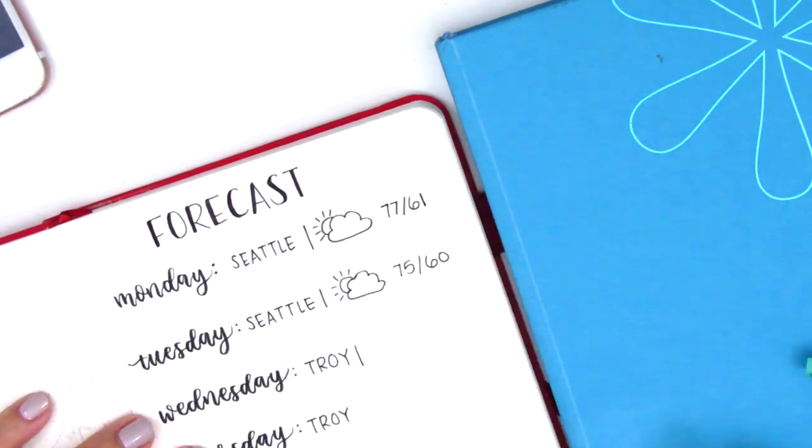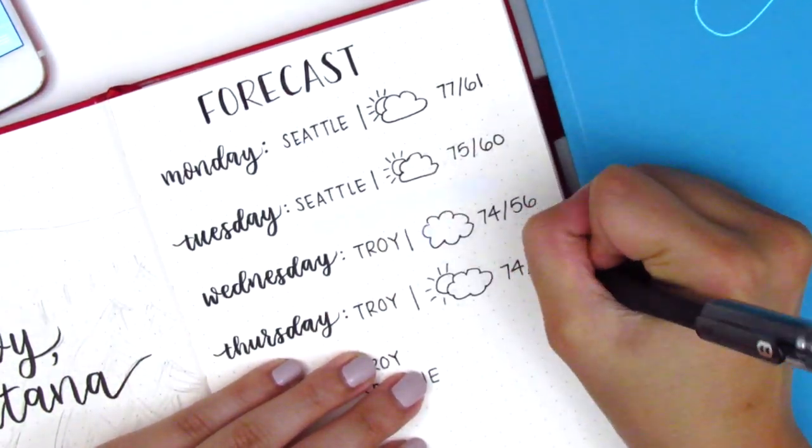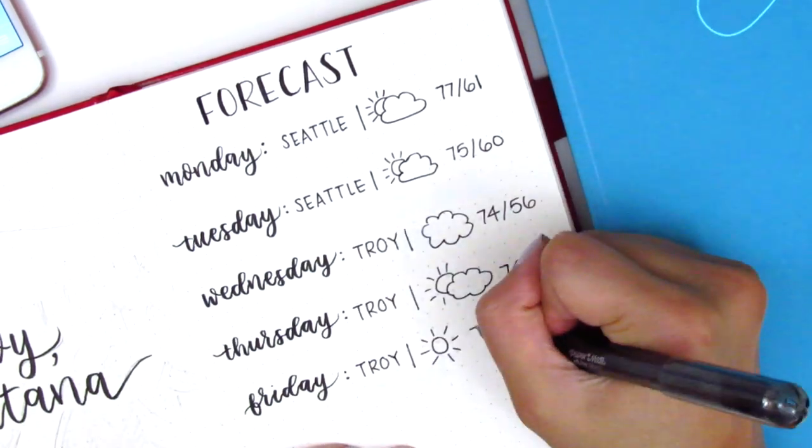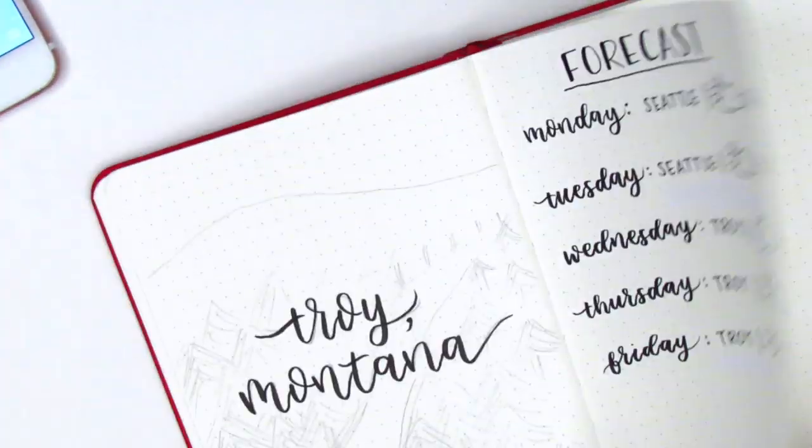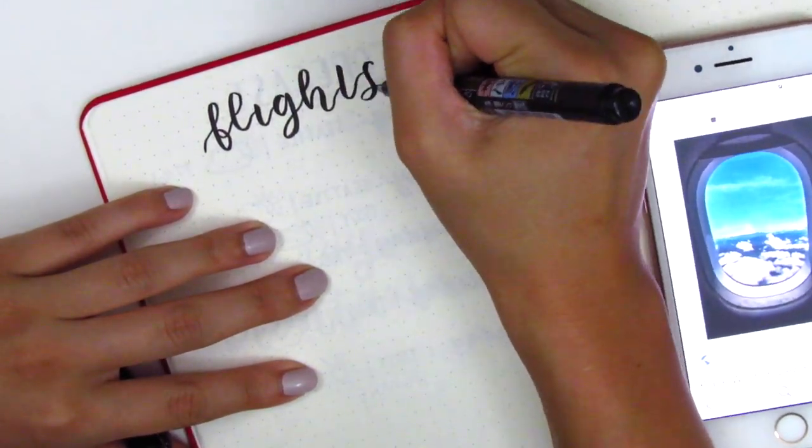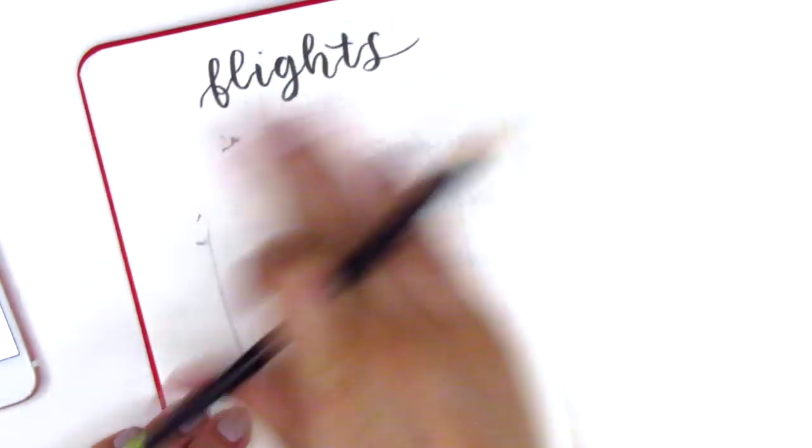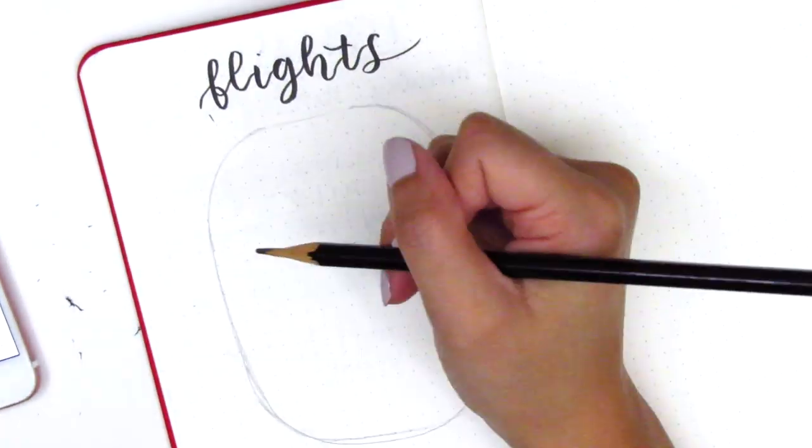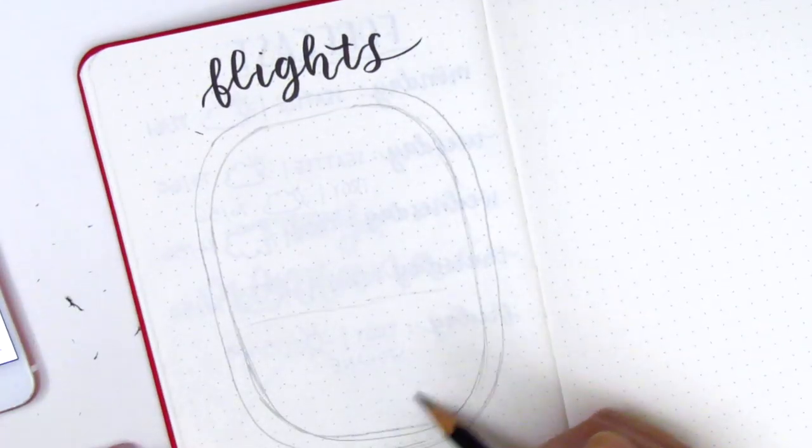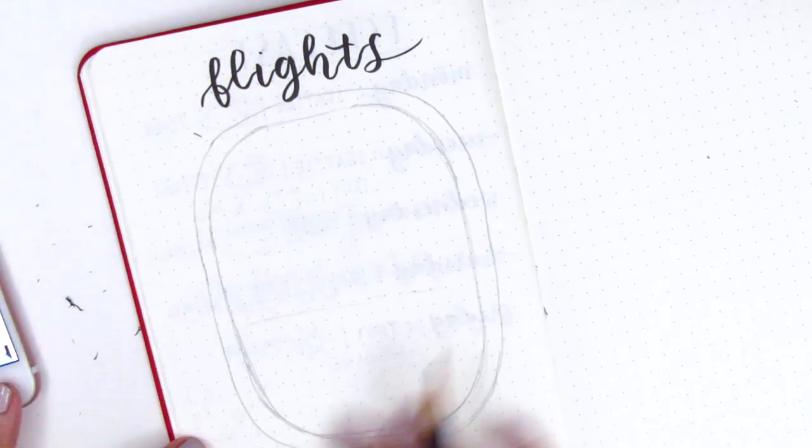To track my flights, I decided to draw a view from an airplane window, and to help me with that I found this image on Google to kind of reference what I wanted it to look like. Then I'm just quickly drawing it or sketching it in pencil, and then I went back in later on, actually when I returned from my trip, to color it in with colored pencils.